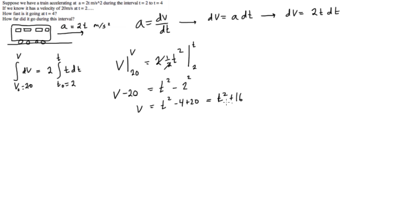This is our expression for v. So now actually what we can do is we can solve right now for how fast is it going at t equals 4. So if we had v at 4 is equal to 4 squared plus 16. Sometimes I like writing the variable right beside it. So v is equal to t squared plus 16, so now we're not getting confused anymore.